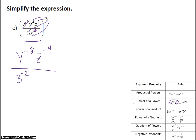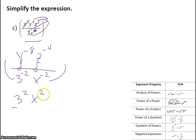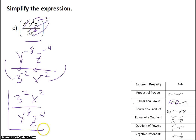So I have z to the negative 4, all over 3 to the negative 2. And x — remember that was x to the 1 power — so it's going to be x to the negative 2, since I'm multiplying them. Anything with a negative exponent gets brought to the opposite side: numerators go down and denominators go up. So I'm going to bring my y's down, my z down, my 3 up, and my x up — everything gets flip-flopped. So it ends up becoming 3 squared x squared over y to the 8th z to the 4th. And you can write 3 squared as 9.